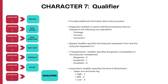The last but not the least — the seventh character provides additional information about the procedure being performed. If a procedure is diagnostic in nature, the character value X is available for most procedures. The diagnostic qualifier is used to identify procedures that are biopsies in root operations like drainage, excision, and extraction. For bypass procedures, the qualifier specifies the body part bypassed from and the body part bypassed to, depending on whether it's coronary or non-coronary. For transplantation, the qualifier specifies the genetic compatibility of the transplanted body part — whether it is autograft, allograft, or identical twin graft.